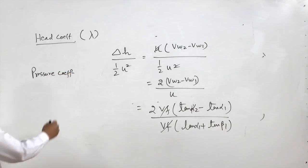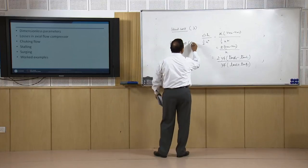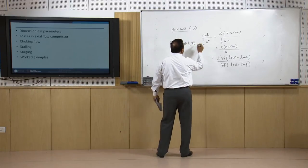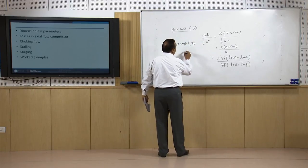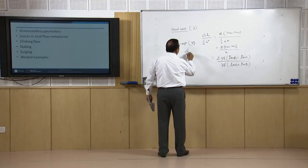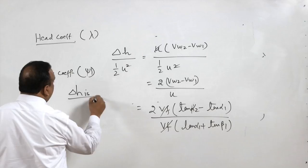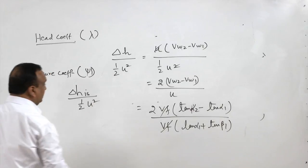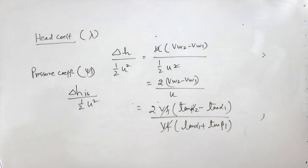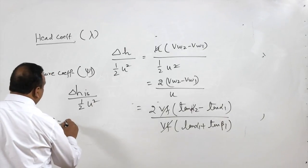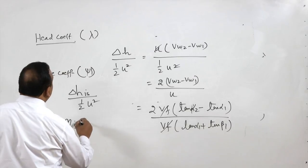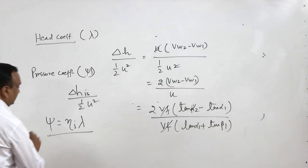After the head coefficient, there is the pressure coefficient. The difference is that in the pressure coefficient, the isentropic enthalpy rise (Δh_isentropic) is taken into account. We can always say that the pressure coefficient equals isentropic efficiency multiplied by the head coefficient.